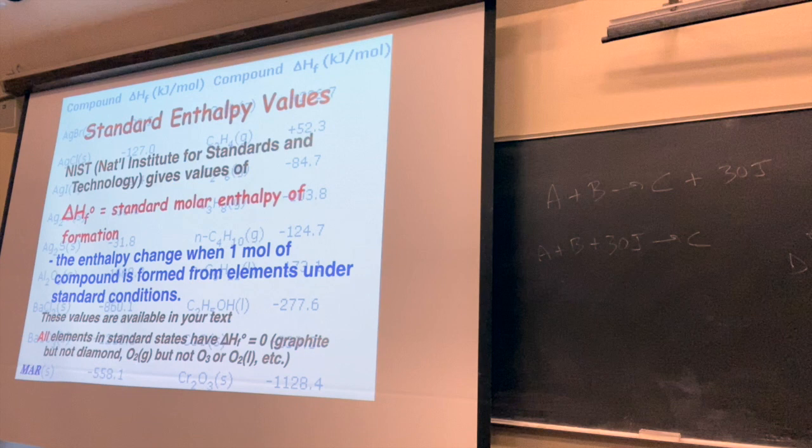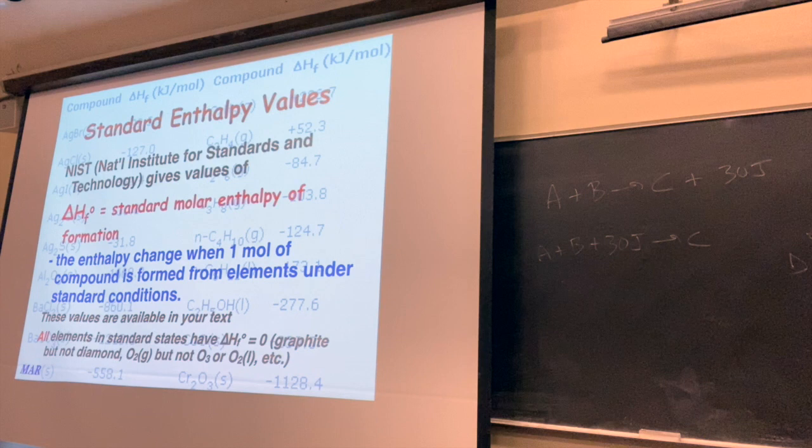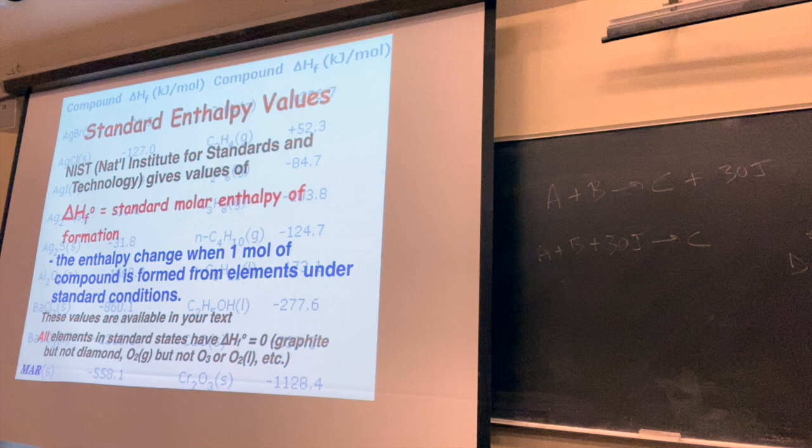A student asks about the lowercase n in front of C4H10. C4H10 has a couple of different forms — one where all the carbons are in a straight line, and one that's branched. The n means all the carbons are in a straight line. We'll see this next time.